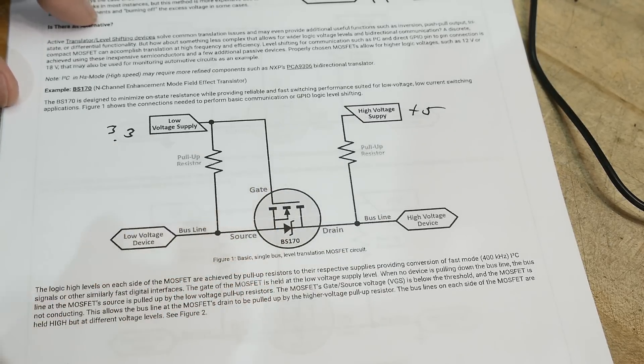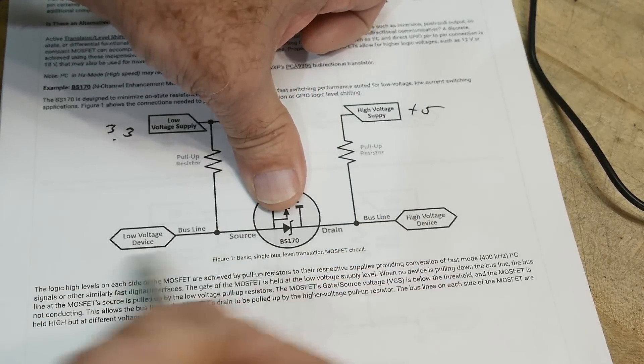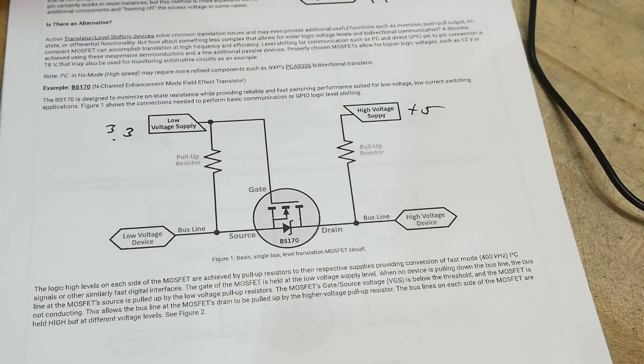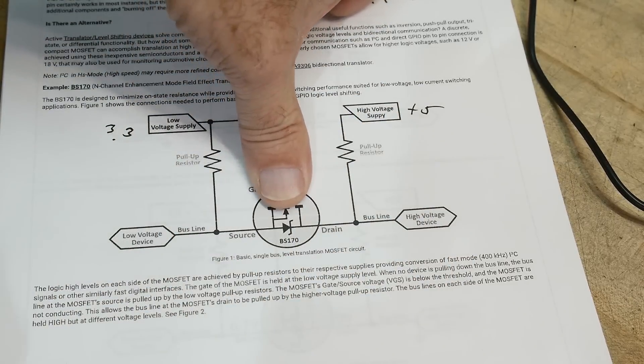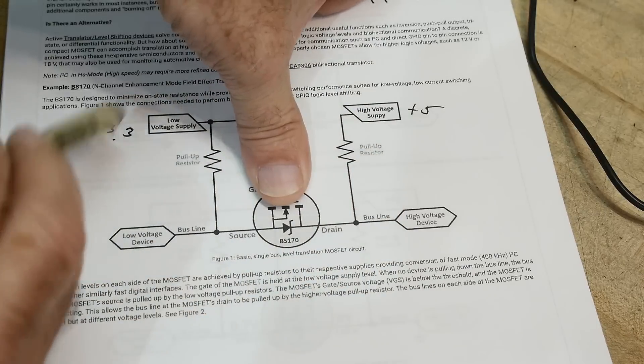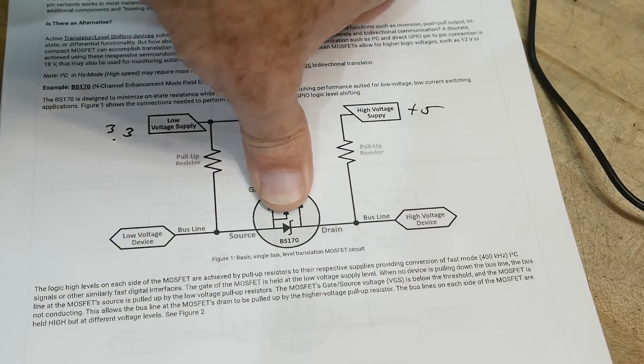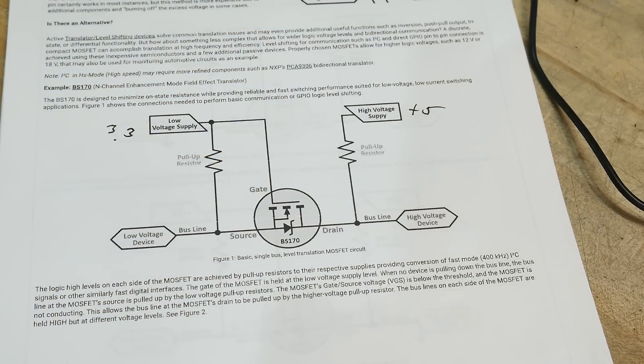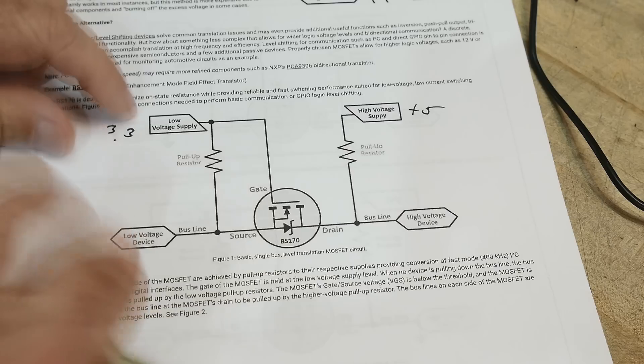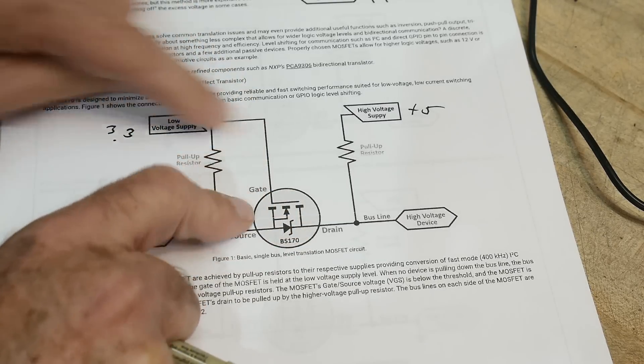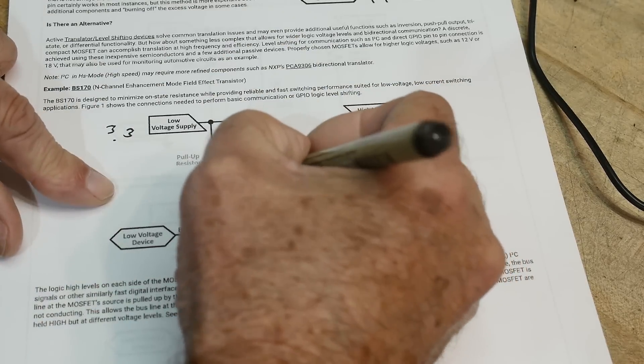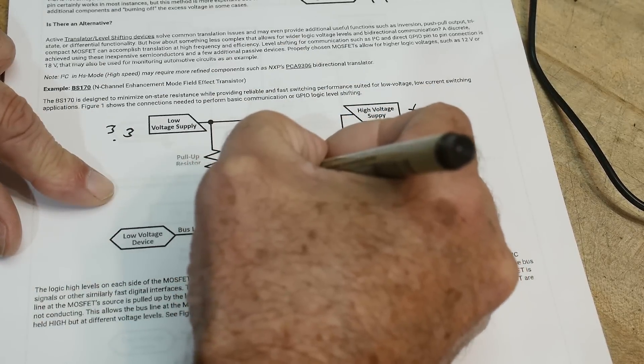So how does this thing work? If this thing is on, then things can just go back and forth. If it's off, then this side will be high and this side will be high. This one will be 5-volt high, and this one will be 3.3-volt high. The FET's gate is always at 3.3 volts. So the gate is always going to be 3.3 volts.